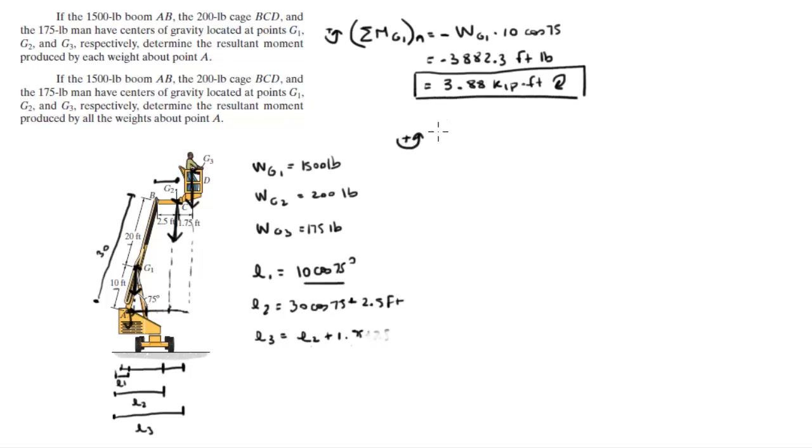The second moment that G2 creates about A is equal to also negative, also going clockwise - WG2 times L2, which is 30 cosine of 75 plus 2.5. This is equal to 2052.9 foot-pounds or 2.05 kilopounds per foot going in the clockwise direction.